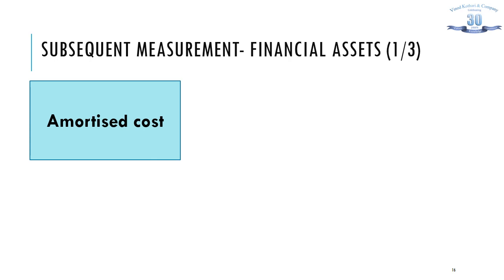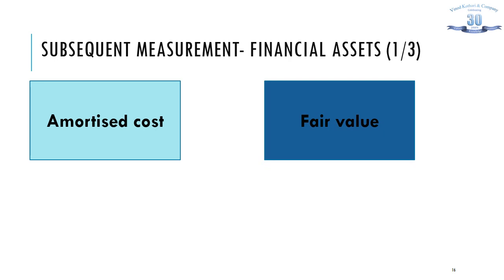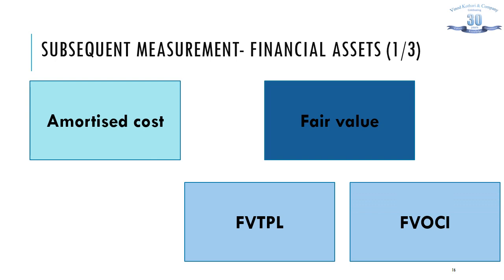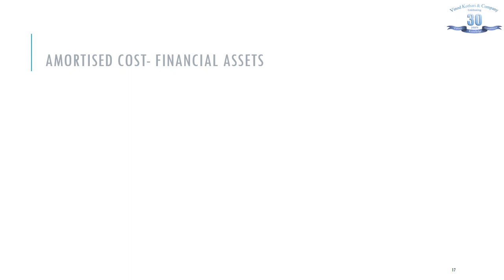Subsequent measurement of financial assets is the most crucial and judgmental concept in IND AS 109. There are two broad models: amortized cost and fair value. Within fair value, there are two choices — FVTPL (fair value through profit and loss) and FVOCI (fair value through other comprehensive income). OCI is the second part of the P&L as provided in IND AS 1. When to adopt which model is given in IND AS 109. Let's first understand the concept of amortized cost.